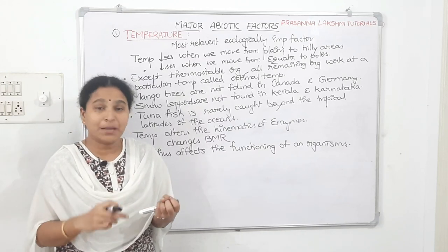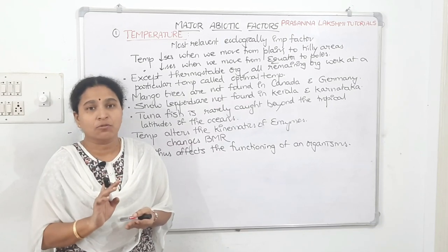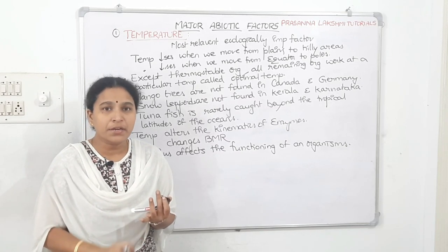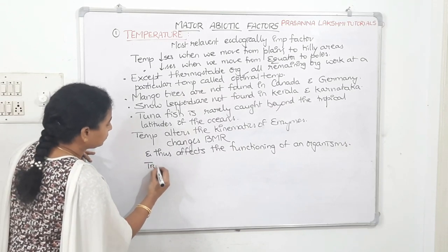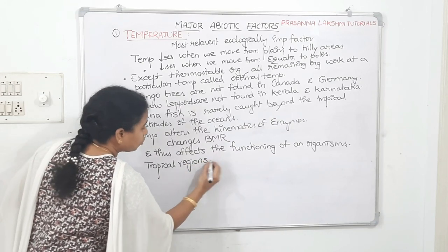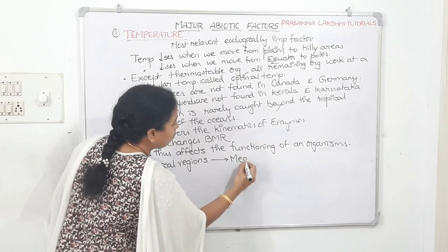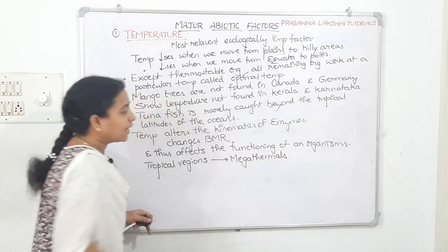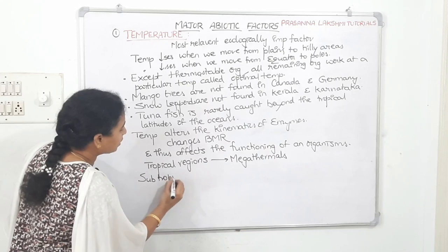There are four main temperature zones: tropical, subtropical, temperate, and Arctic and Antarctic. The organisms growing in tropical regions are called megathermals. Organisms growing in subtropical regions are called mesothermals.